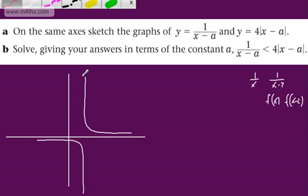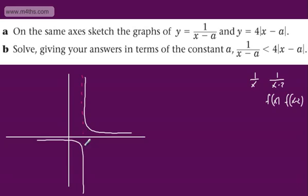The asymptote is x = a. So let's put that on there. Now I appreciate this is just a rough sketch, but it should give you some idea of what's going on. So that is the line x = a — the asymptote.